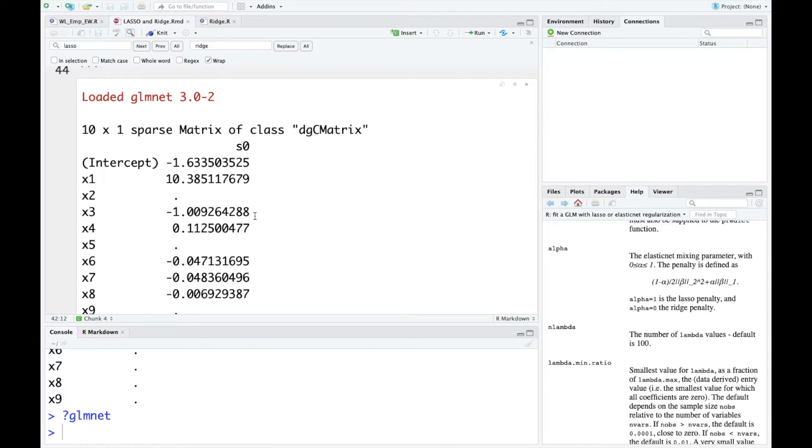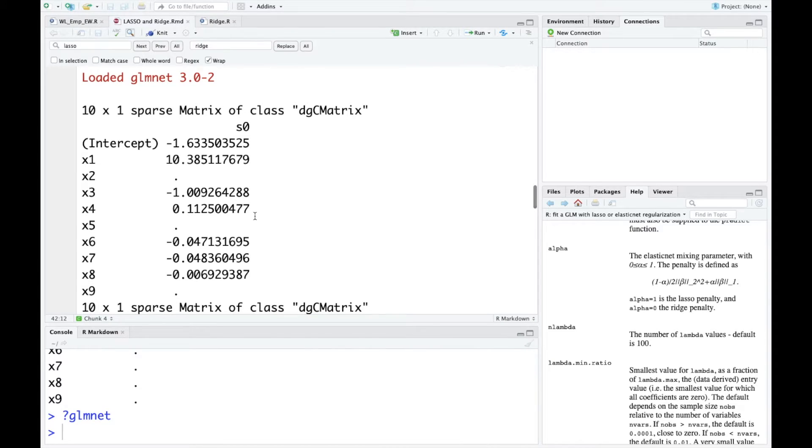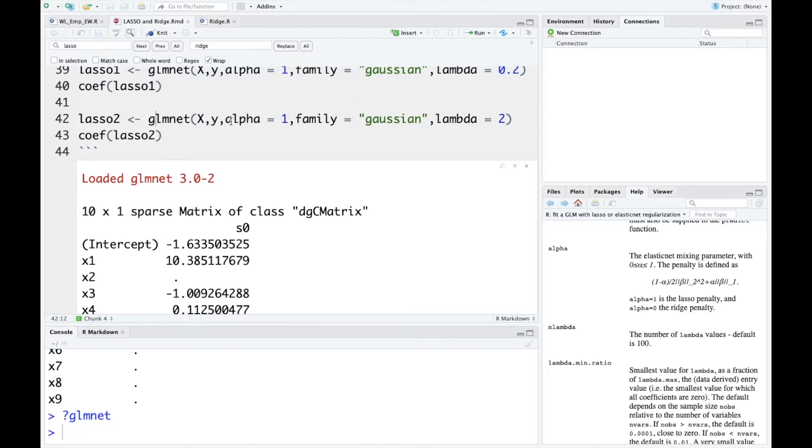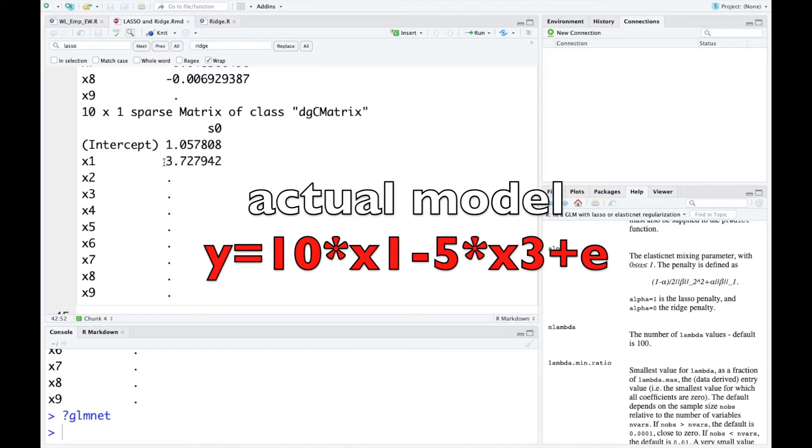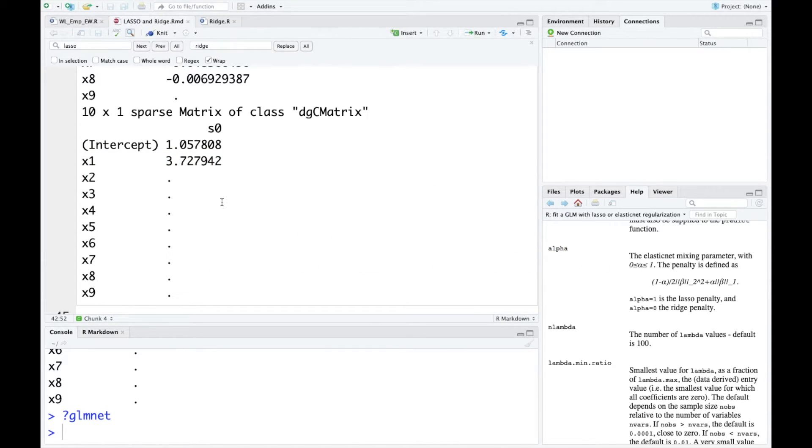Later on, I'm going to introduce to you a different method to evaluate the performance of the prediction models, which can compare different models fairly. Let's look at another set of results. That's for lambda equals to 2. My lambda is probably too big such that all the coefficients are shrunk to 0 except for x1. The x1's coefficient is quite far from the actual model, which is 10. This lambda value is probably too big, but later on I can evaluate this model with a method that I'm going to teach you.